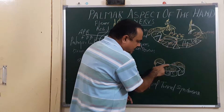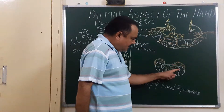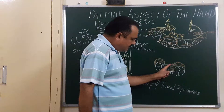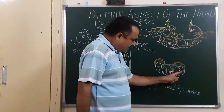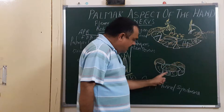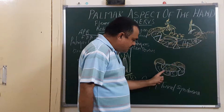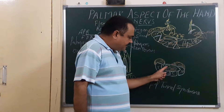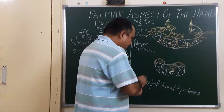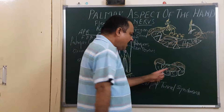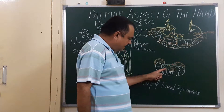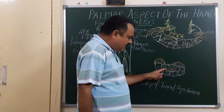Here, under cover of the flexor retinaculum — between the flexor retinaculum and the carpal bones — an osteofibrous tunnel is formed. Through this osteofibrous tunnel, the median nerve passes. Here is the median nerve, along with the ulnar bursa and radial bursa.